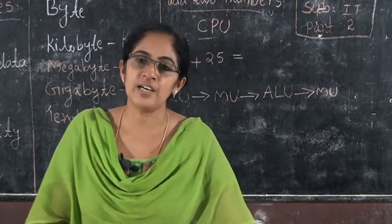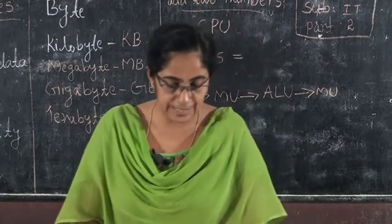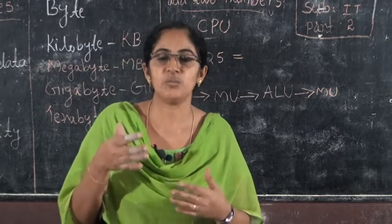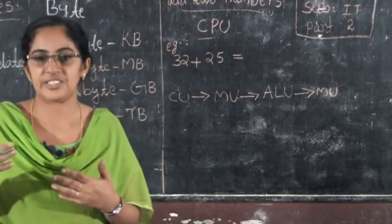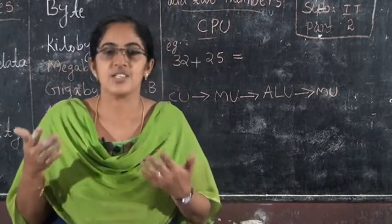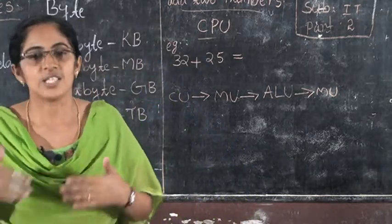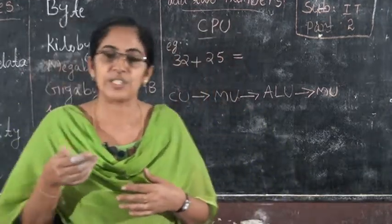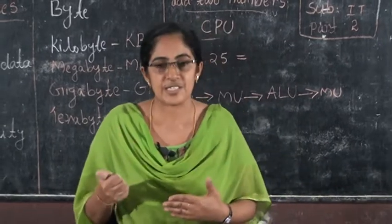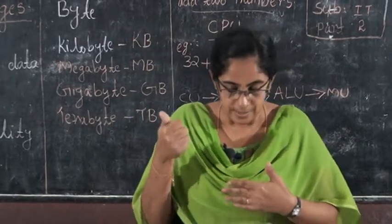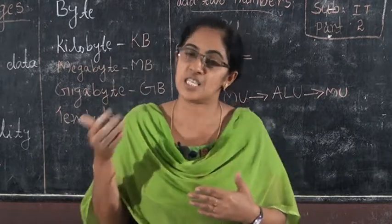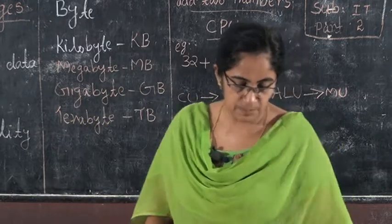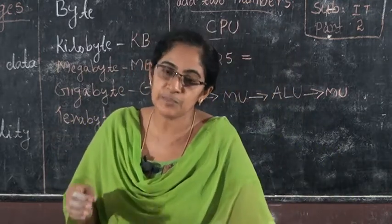Now, the functioning of the IPO cycle. A computer system takes data from the keyboard or mouse and sends it to the CPU for processing. The CPU will process it, and then send the result to the monitor or printer.